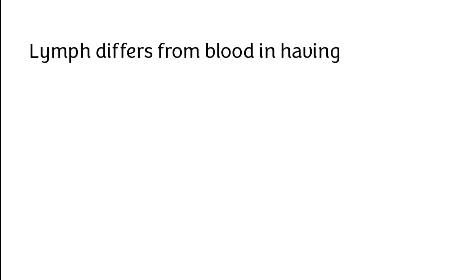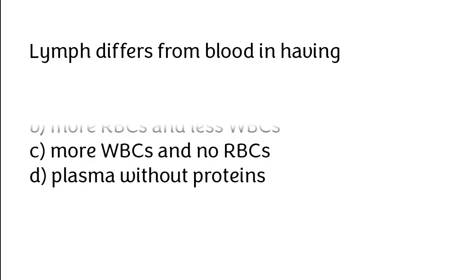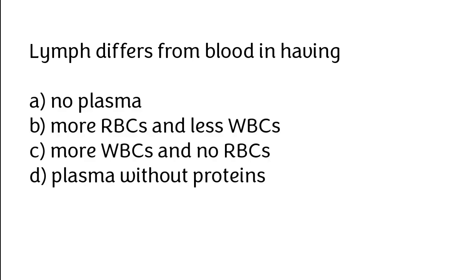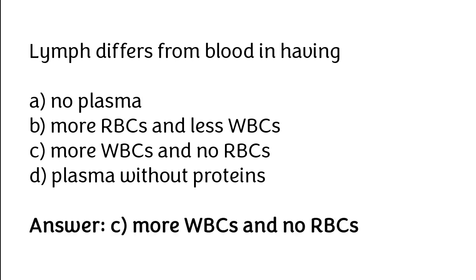Lymph differs from blood in having: no plasma, more RBCs and less WBCs, more WBCs and no RBCs, or plasma without proteins. The correct answer is option C: lymph differs from blood in having more WBCs and no RBCs.